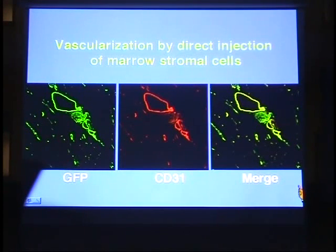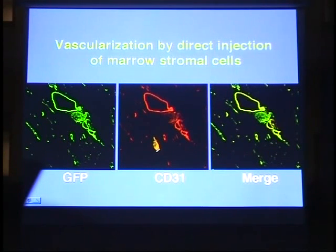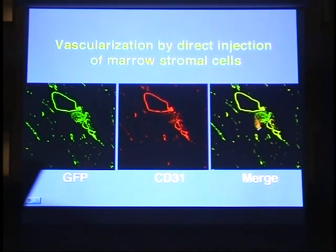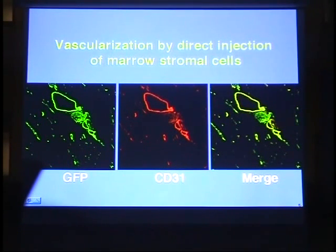The marrow stromal cells also differentiate into endothelium. The fluorescence of the injected cells, the rhodamine red of CD31, and the merge of GFP and rhodamine red clearly demonstrate that the injected cells differentiate into endothelium. Very interestingly, these generated vessels contain red blood cells, indicating that the vessels connected to the host vascular system by certain mechanisms and supply blood to the tissues.